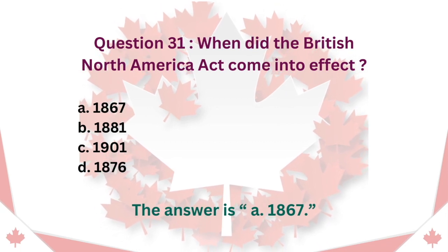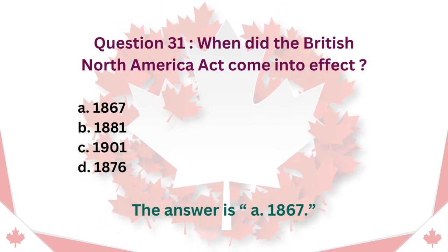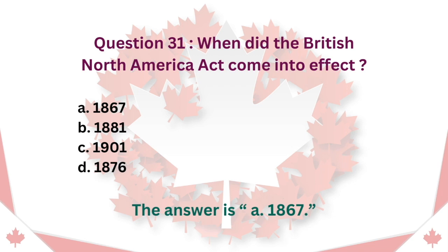Question 31: When did the British North America Act come into effect? A. 1867. B. 1881. C. 1901. D. 1876. The answer is A. 1867.